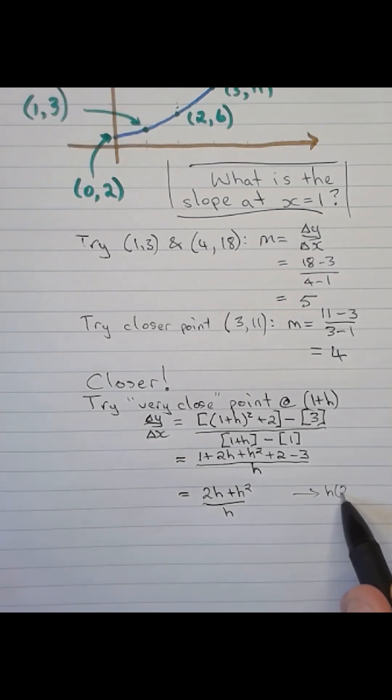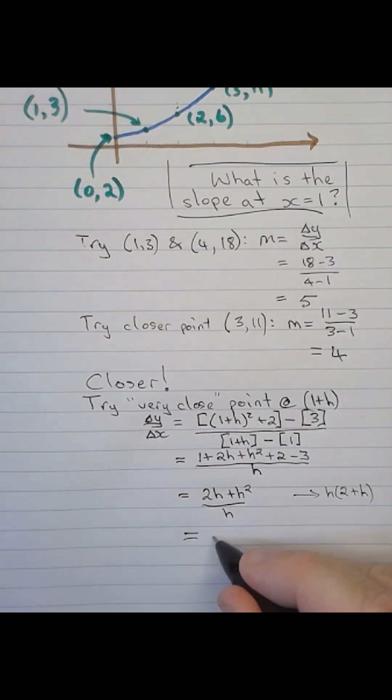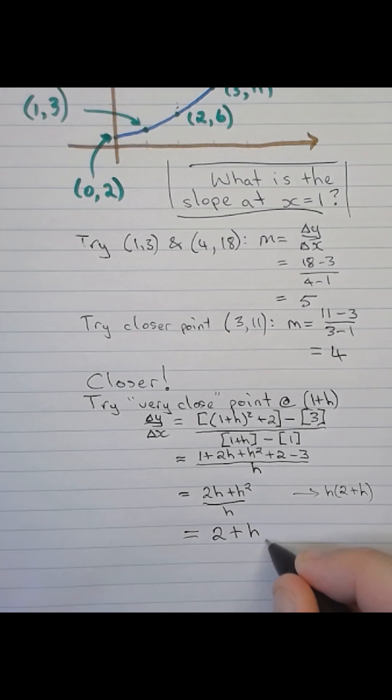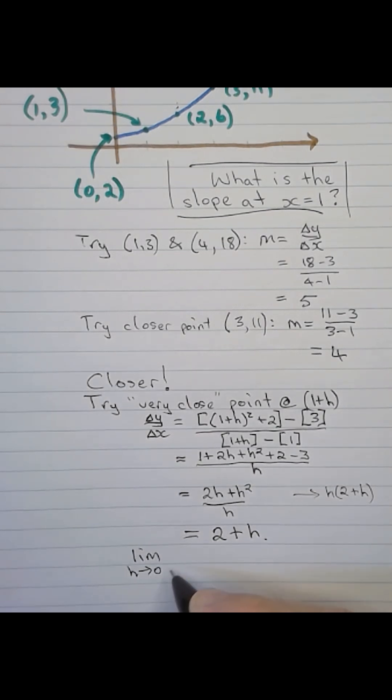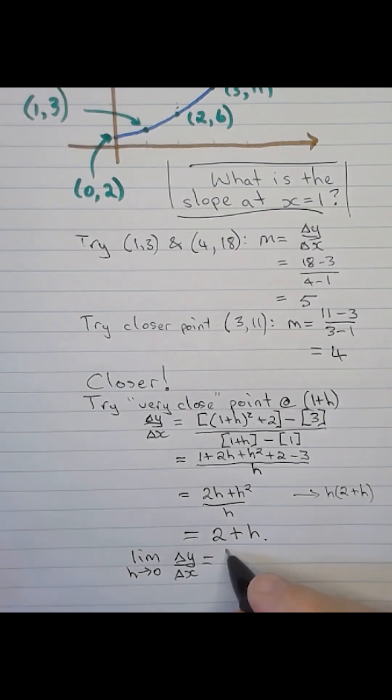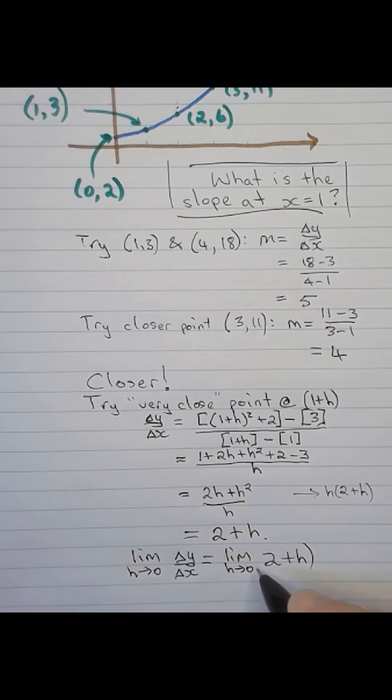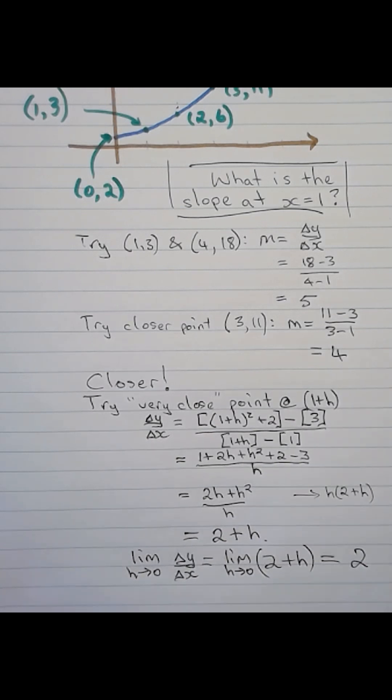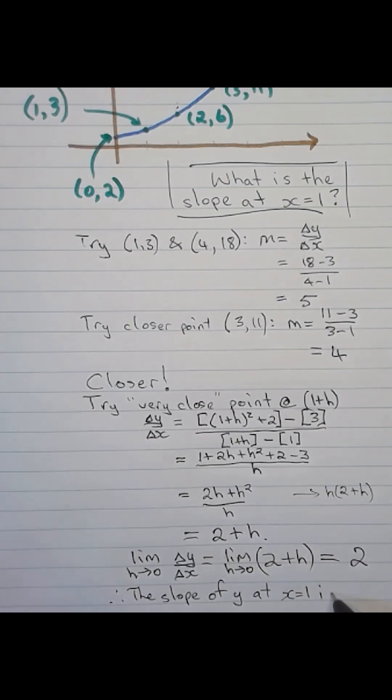So now our gradient, if we end up with 2 plus h as our result, consider what happens as our second point gets closer and closer to the one we're interested in finding the slope at. This is what's called taking the limit as h approaches 0. That limit is just going to be 2 because h will keep getting smaller and approaching 0. This means we're going to take the slope of y at x equals 1 to be equal to 2.